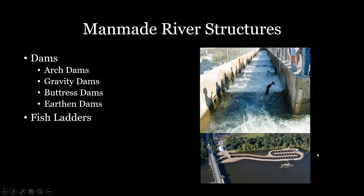Another interesting feature sometimes built into dams are fish ladders. Fish have an extremely hard time trying to pass over a dam, and many fish species need to be able to travel large distances through a river system. So in order to accommodate them, we sometimes make fish ladders — a series of cascading pools that flow down from the dam so fish can swim up that ladder and reach the higher section of water.